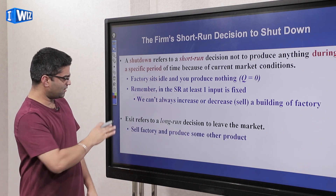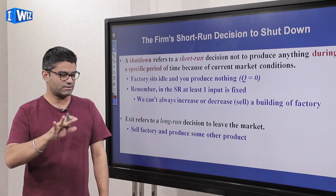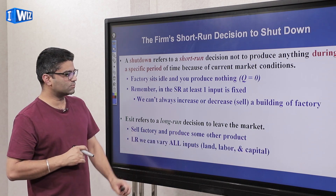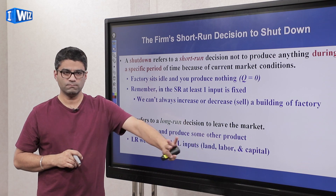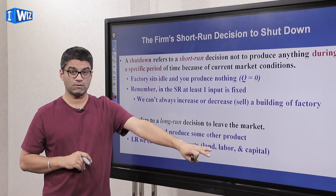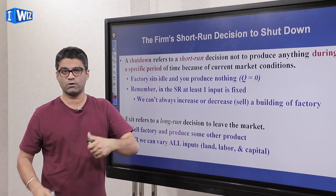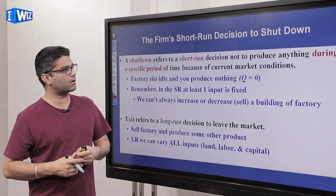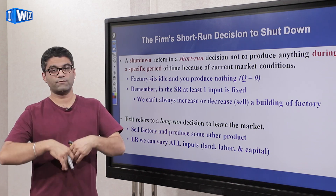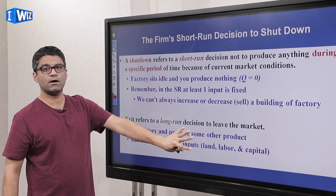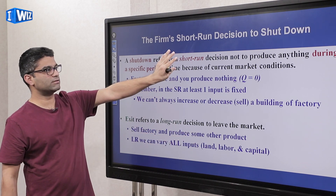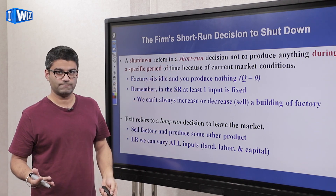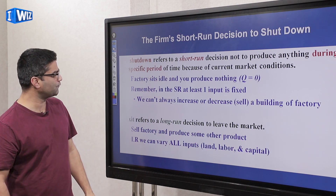In the long run, all your inputs are variable. You can get rid of your lease, your machines, and the labor you've hired — all inputs are variable. Whereas in the short run, there are some inputs constraining you because they cannot be changed. If you're not clear on the difference between short and long run, go review the video on that topic.